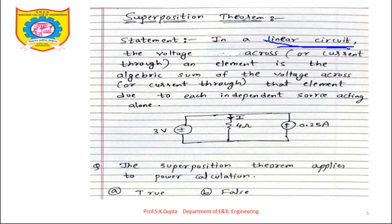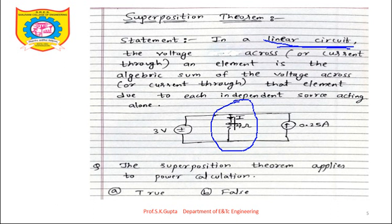If there is a nonlinear circuit, we cannot use the superposition theorem. With the help of the superposition theorem, we calculate the voltage across or current through any element. Whenever we use superposition theorem, we consider a number of cases equal to the number of sources — here there are two sources, so we consider two cases.